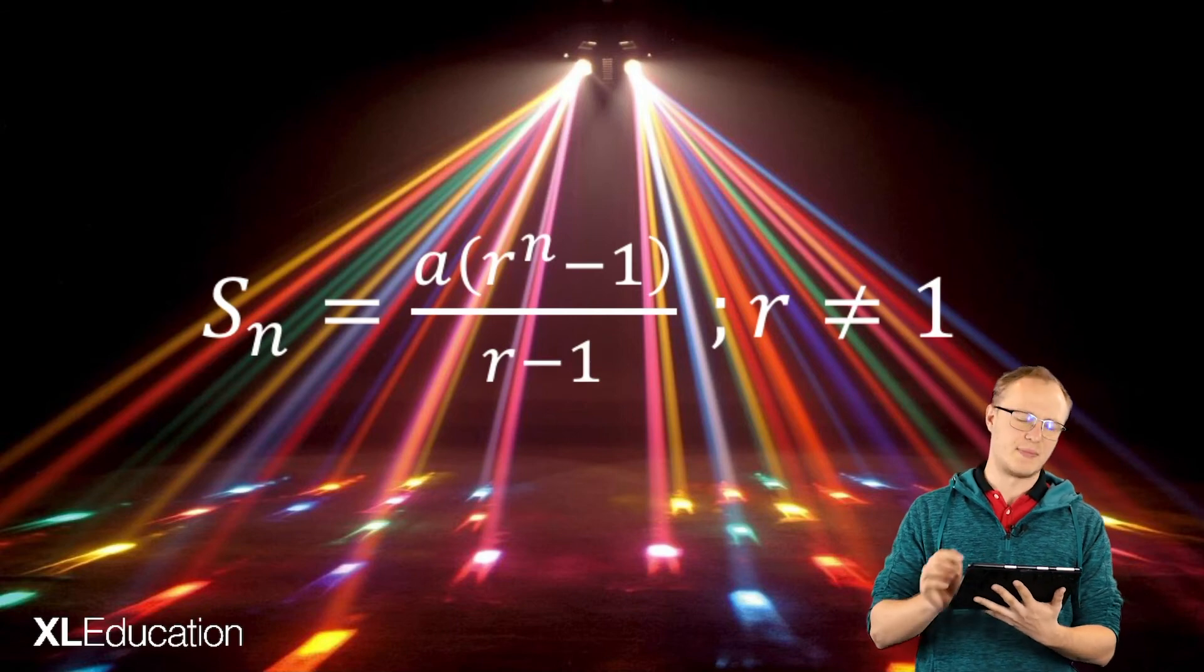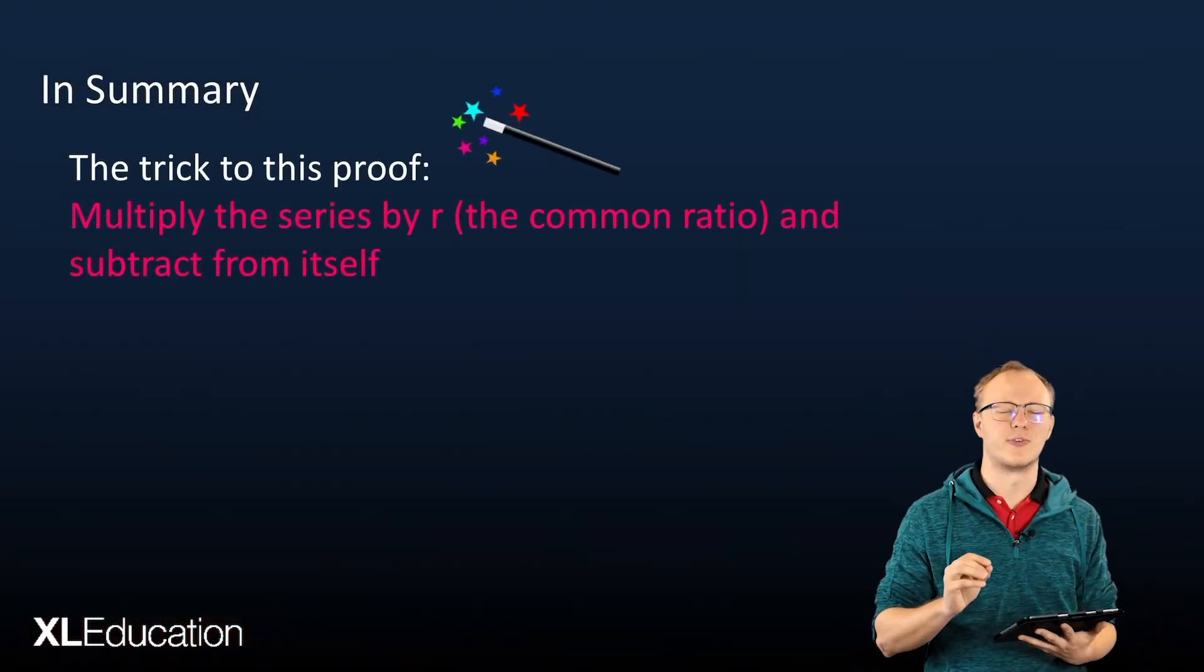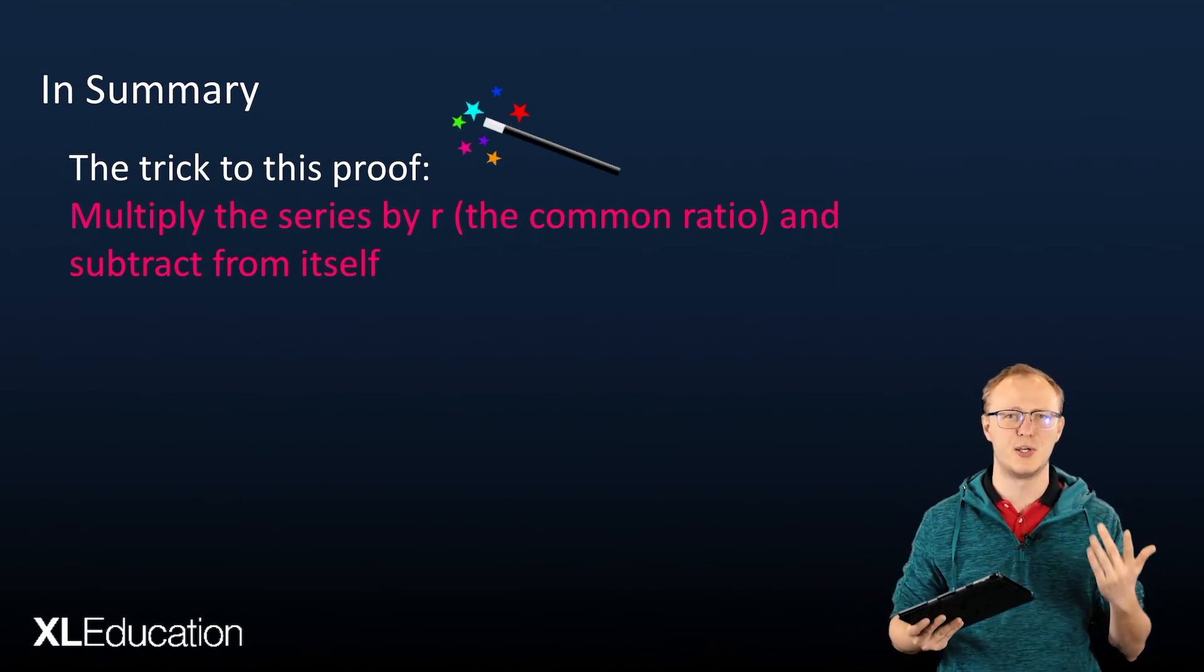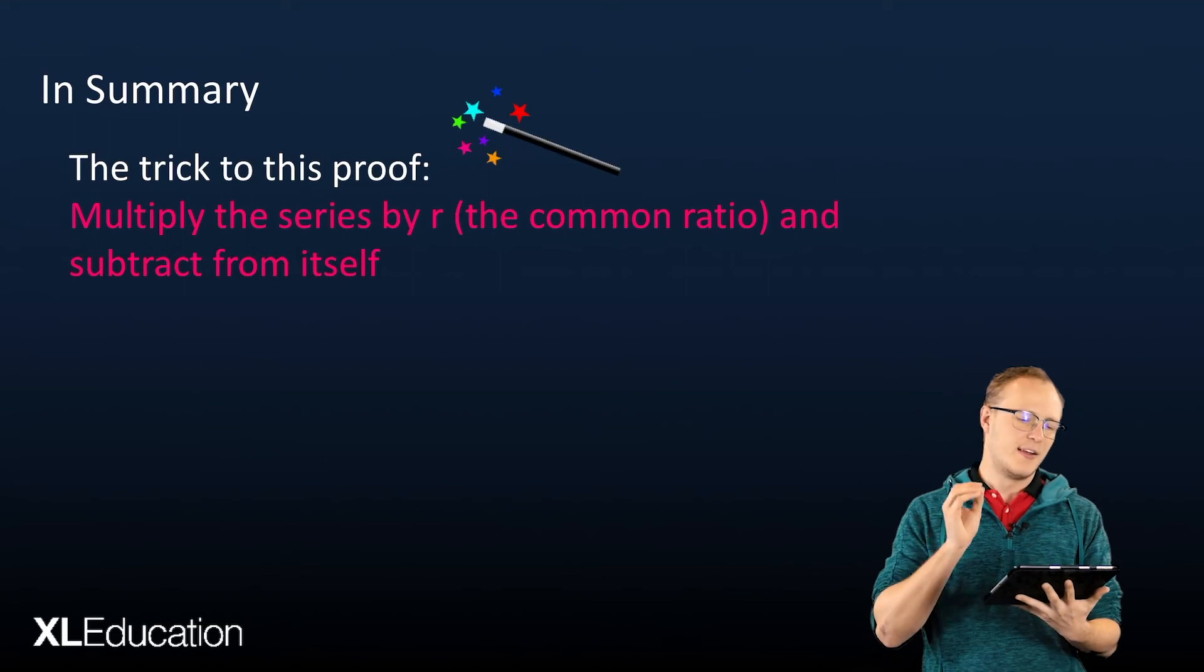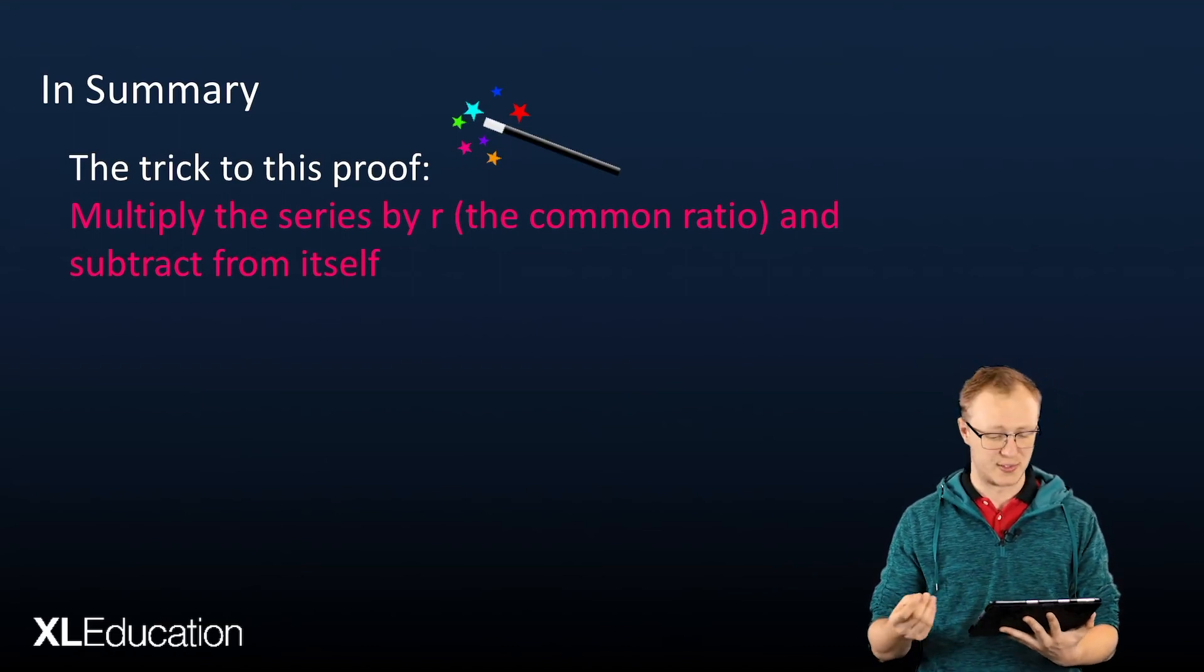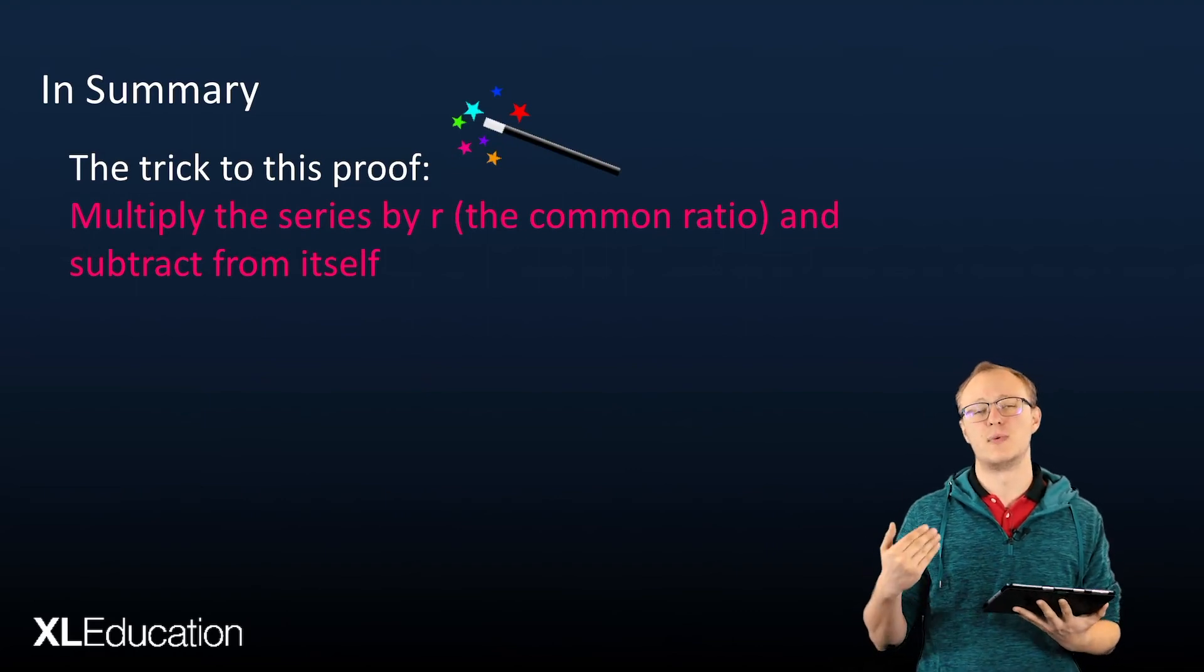So let's summarize what we've just learned. The trick to this proof, that magical thing that you remember that makes you go aha, this is beautiful, I love math, etc.—that is to multiply the series by r, which is the common ratio, and then subtract the series from itself.